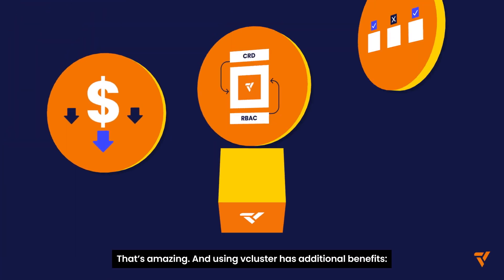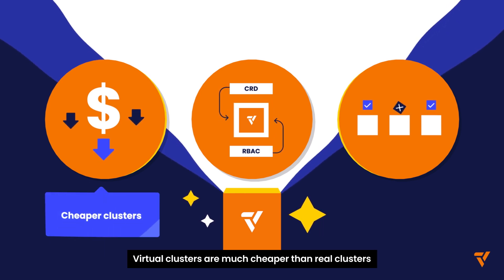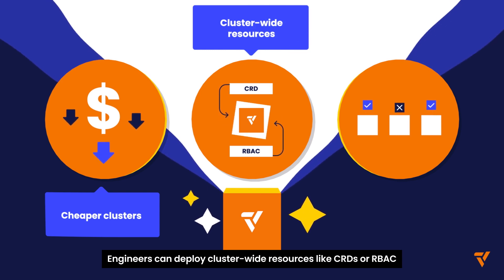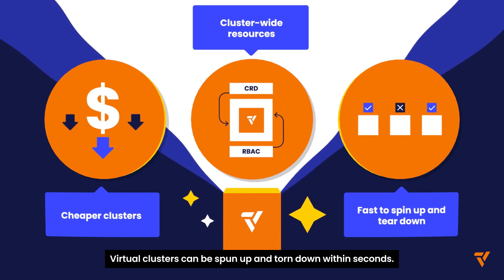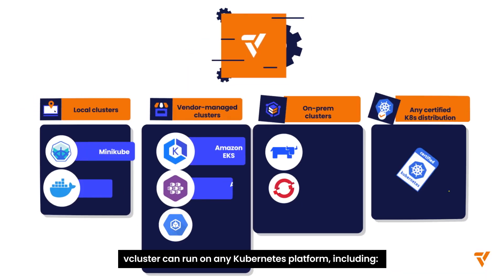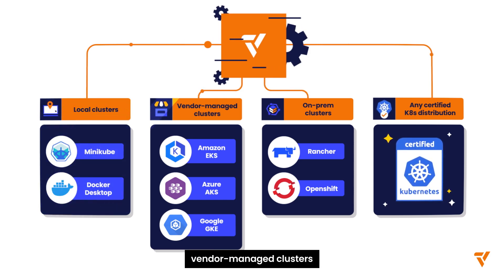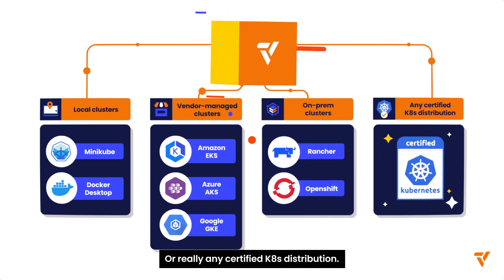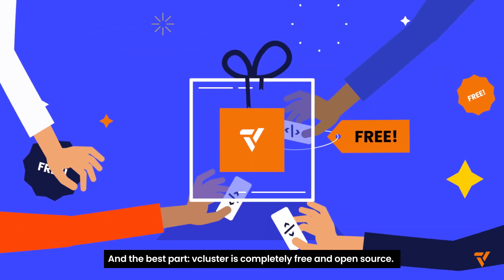Using Vcluster has additional benefits. Virtual clusters are much cheaper than real clusters. Engineers can deploy cluster-wide resources like CRDs or RBAC. Virtual clusters can be spun up and torn down within seconds. Vcluster can run on any Kubernetes platform, including local clusters, vendor-managed clusters, on-prem clusters, or really any certified Kubernetes distribution. And the best part? Vcluster is completely free and open source.